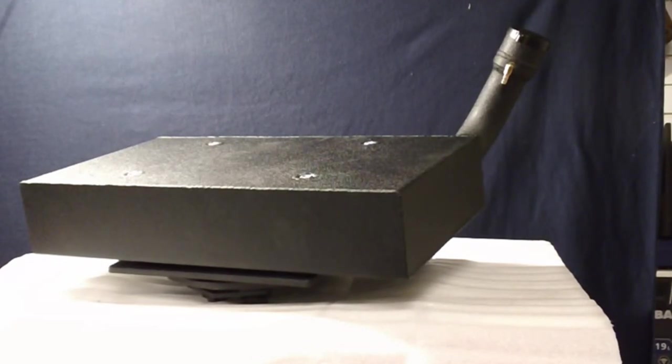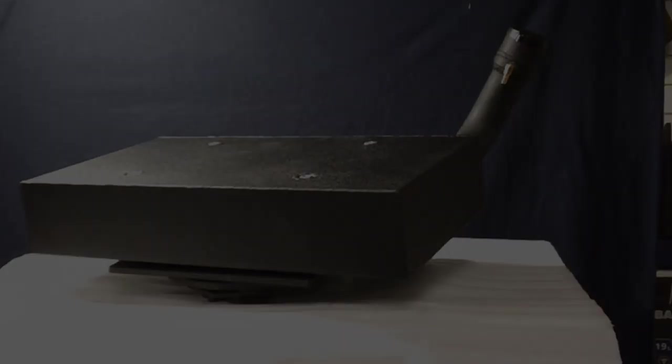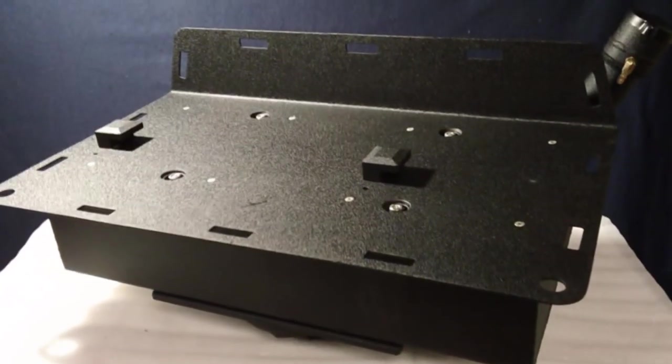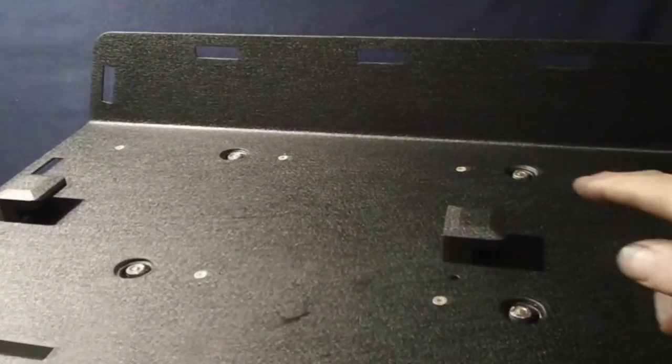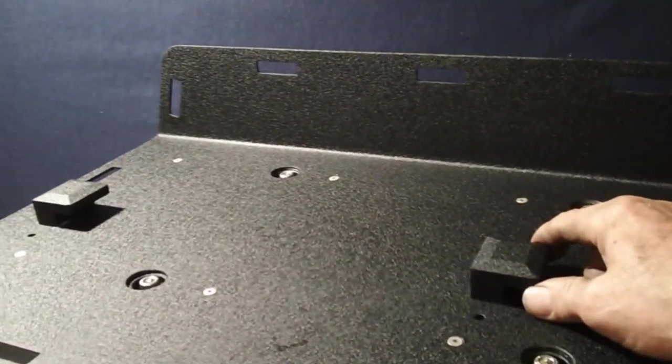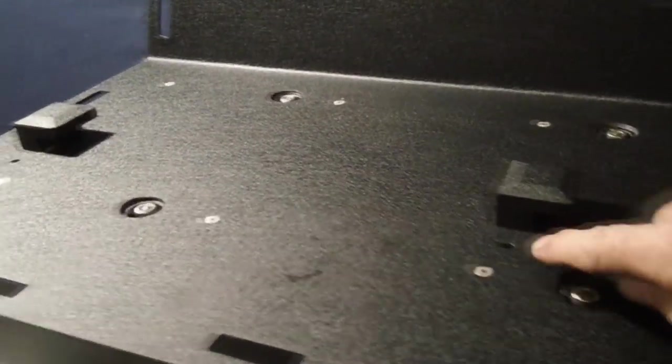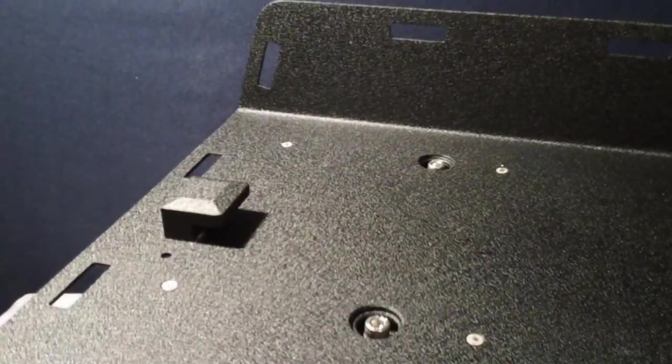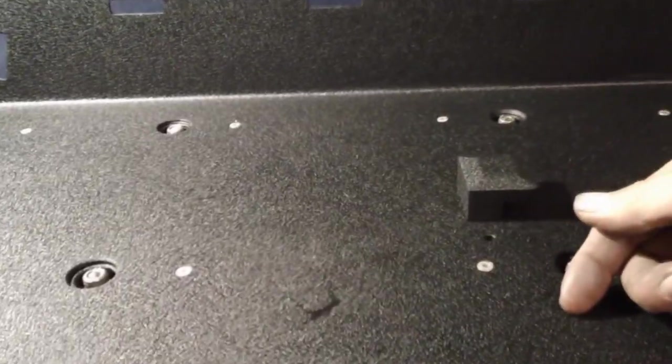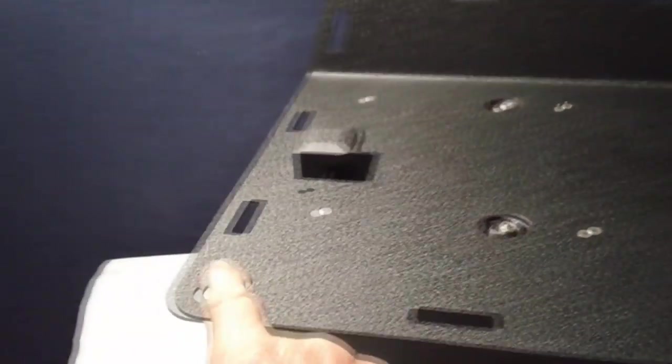Here we have the completed assembly. We'll recap some of the features and point out some new ones. There is an extra hole with each luggage mount L-bracket. This allows the Pelican Storm case to be moved rearward one inch, which provides additional space at the front should you need it. There are antenna holes at the rear corners and rectangular tie down slots around the perimeter of the deck.